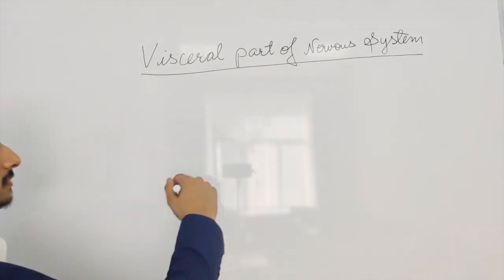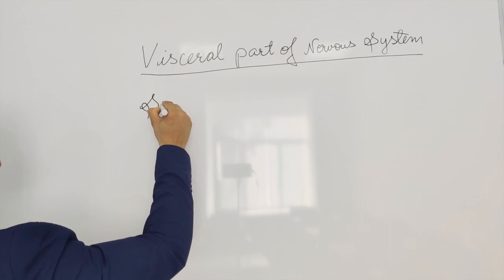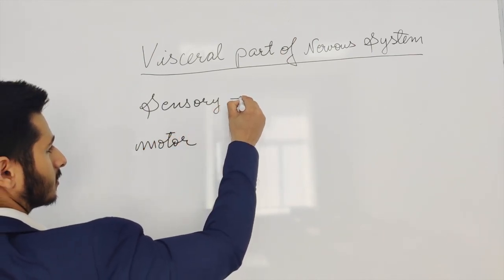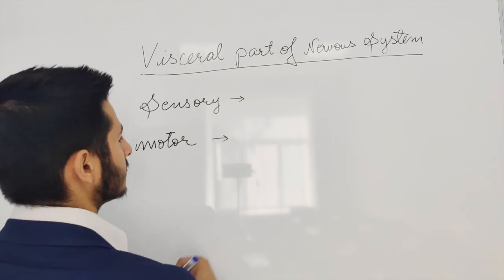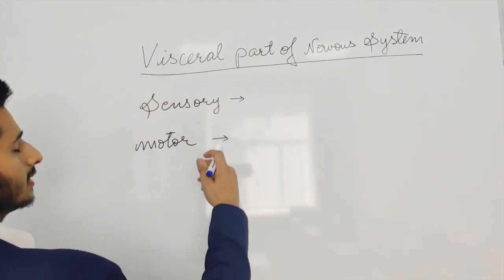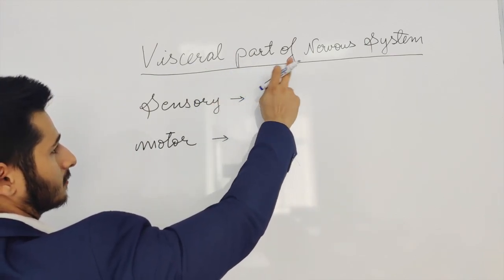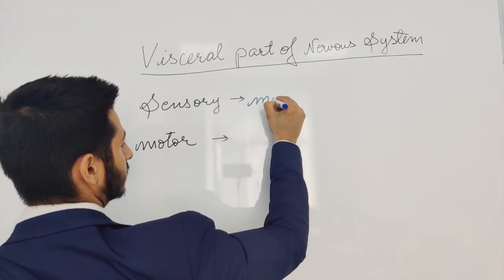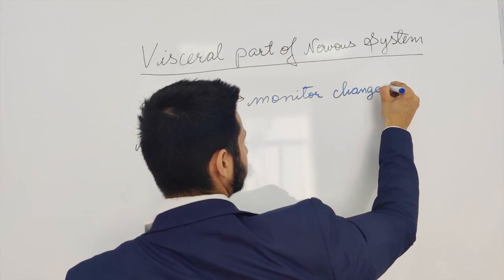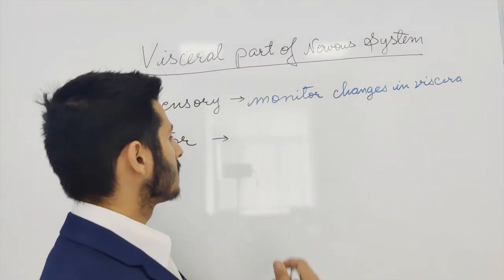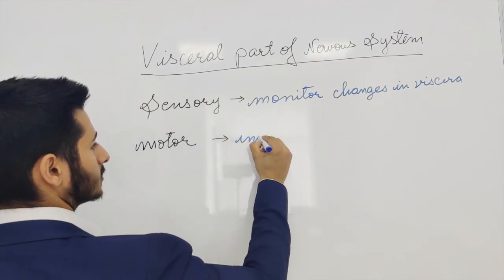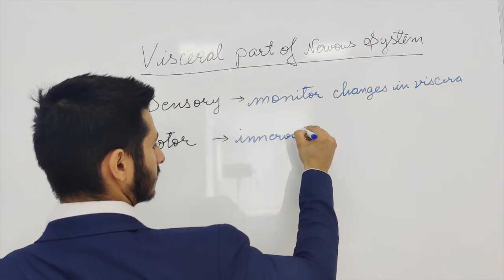The visceral part of the nervous system has both sensory and motor neurons. The sensory neurons monitor changes in the viscera — whenever there is some kind of change in the internal organs of the body, that information is carried by sensory neurons of the visceral part of the nervous system. The motor neurons innervate the glands, smooth muscles, and cardiac muscle.